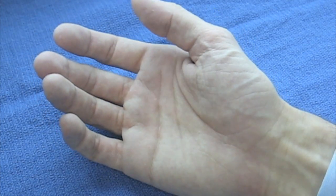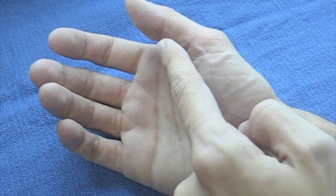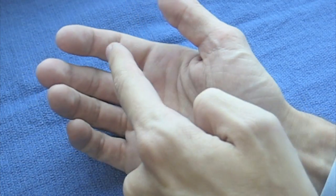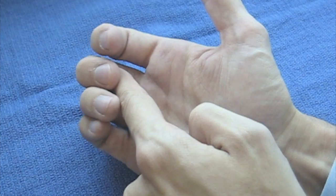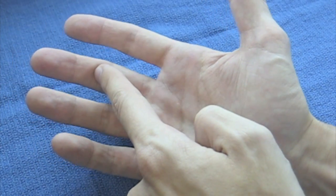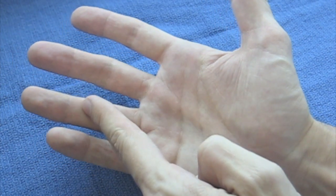The names of the fingers are as follows: thumb, index finger, middle finger (sometimes called the long finger), ring finger, and small finger.